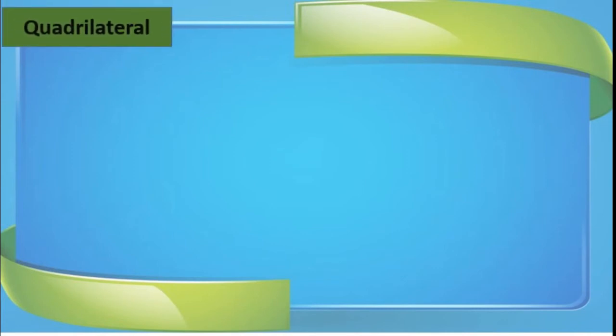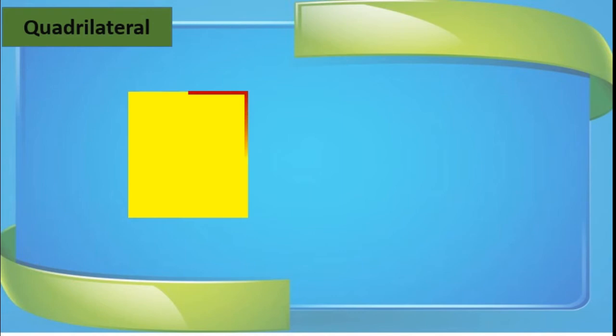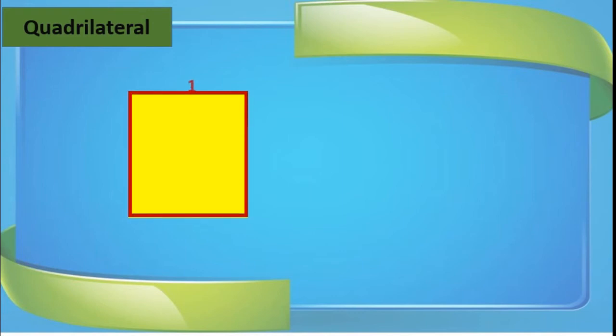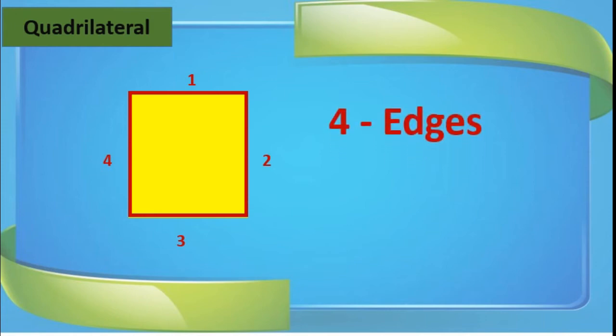Now we will study something more about the quadrilateral. This is a quadrilateral because it has four sides and is a closed figure. We will count the edges and corners. This is called an edge — the quadrilateral has a first edge, second, third, and fourth. So the quadrilateral has four edges.